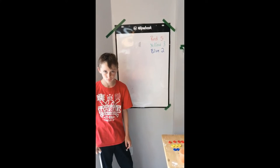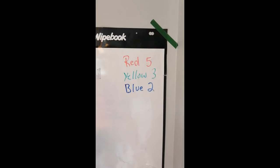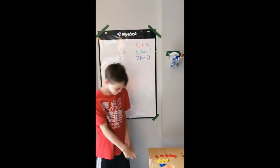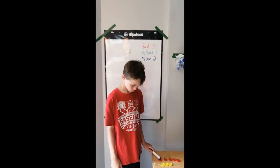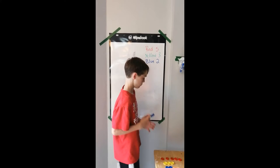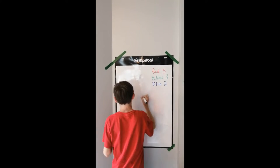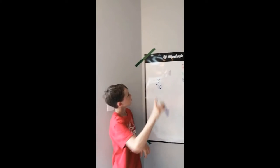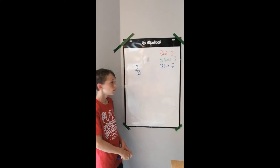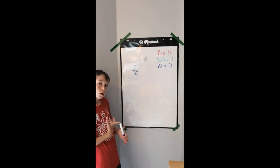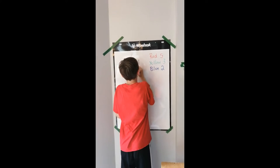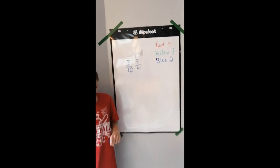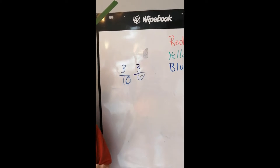Now everybody has had a chance to see the chips. We have five red, three yellow, and two blue. Mark, if those chips were in a cup, what would be the probability of pulling a yellow one? The odds of pulling a yellow one are three-tenths. Now, looking at independent events — if you take that yellow one and put it back, what are the chances of pulling a yellow one again? Obviously, three-tenths.